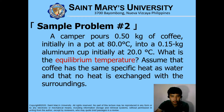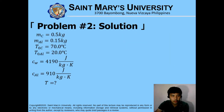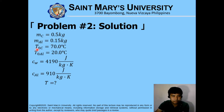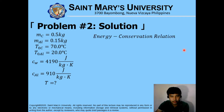Identifying the givens and the target variable: the target variable is the equilibrium temperature. We have the mass of the coffee as 0.5 kg, aluminum as 0.15 kg, the initial temperature of the coffee is 80 degrees Celsius, and the aluminum is 20 degrees Celsius. For the energy conservation relation, we can write: energy entering is equivalent to the energy leaving.